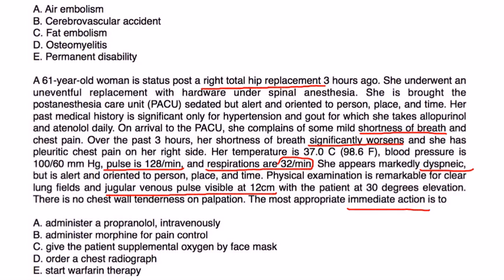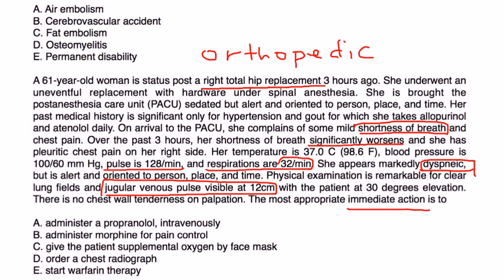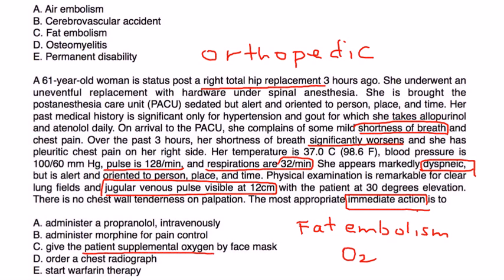The most appropriate immediate action: she had an orthopedic procedure and now has pulmonary changes — shortness of breath, difficulty breathing, and elevated JVP. Part of the supportive therapy for fat embolism, which is most likely what she has, is immediate supportive care. There's no actual cure or magic treatment, so supportive care for someone who is dyspneic is giving oxygen. The answer is to give the patient supplemental oxygen by face mask.